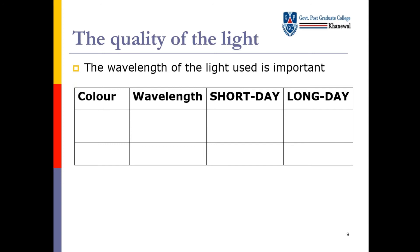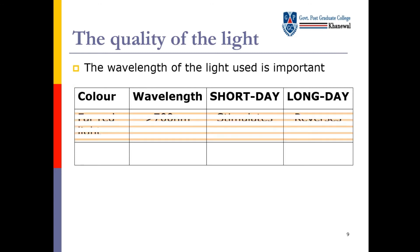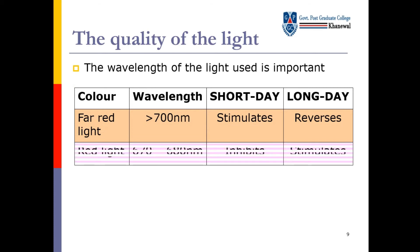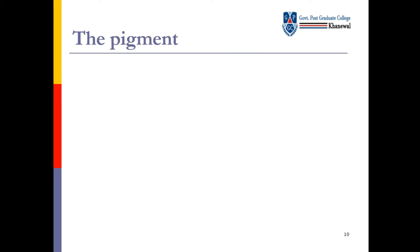The quality of light — the wavelength of the light used is most important. Far red light کی wavelength 700 nanometers ہے. Short day میں یہ stimulate کرتی ہے اور long day میں reverse کر دیتی ہے. Red light کی wavelength 670 to 680 nanometers ہے — یہ short day میں inhibit کرے گی اور long day میں stimulate کرے گی.